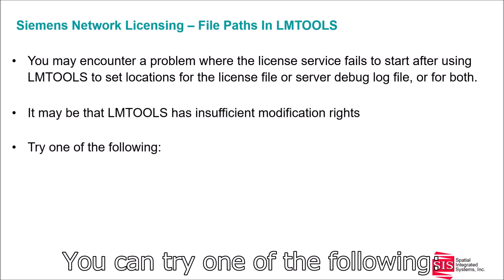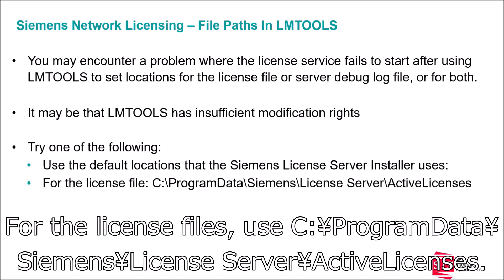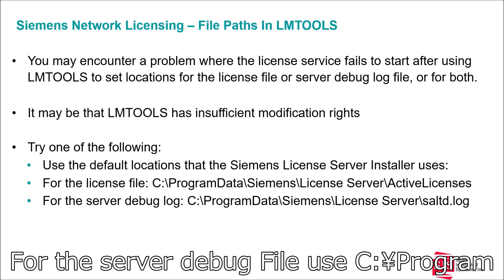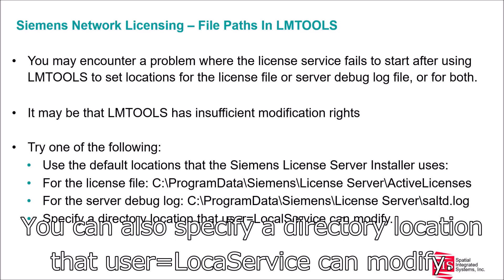You can try one of the following: Use the default locations that the SIEMEN license server installer uses. For the license files, use C:\ProgramData\Siemens License Server\active licenses. For the server debug file, use C:\ProgramData\Siemens License Server\ and saltd.log as the name of the file. You can also specify a directory location that the user LOCAL SERVICE can modify.